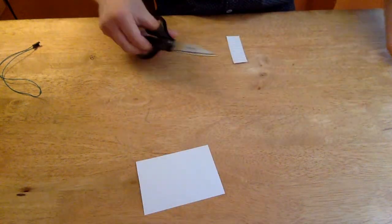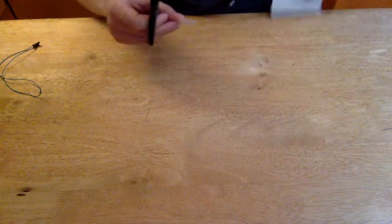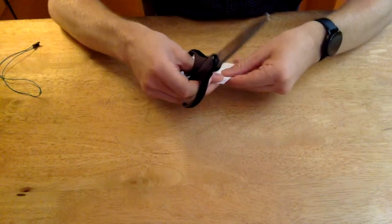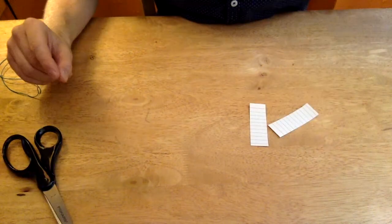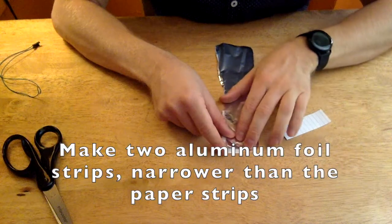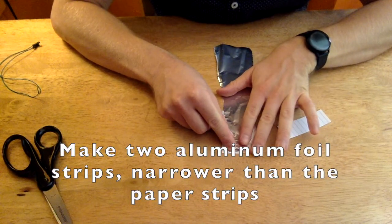Doesn't need to be exact, just want it to be close enough. We'll make two strips, same size. We want our aluminum foil to be a little bit more narrow than the paper itself.